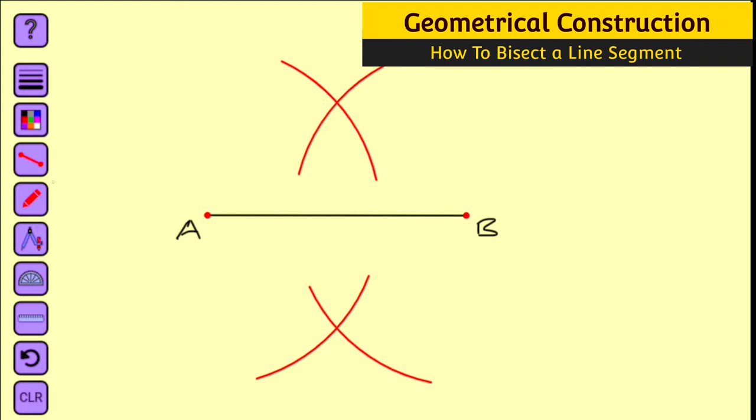Now you can see we have two intersections. Let me name them C and D. These are the two intersections. Next, use your ruler to connect these two intersections C and D together.